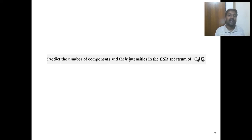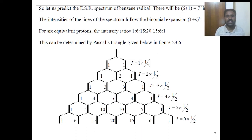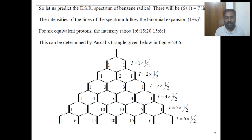Can you predict the number of ESR lines for the benzene radical anion? Due to conjugation, the electron interacts with all six equivalent hydrogens. Applying 2NI plus 1 with N equal to 6 and I equal to half: 6 plus 1 equals 7 lines. The intensity ratios are 1:6:15:20:15:6:1 as predicted by Pascal's triangle. As the number of nuclei the electron interacts with increases, the spectrum becomes complex - more lines appear with varying intensities.